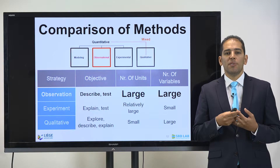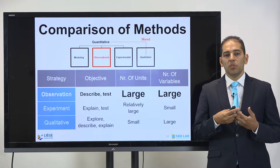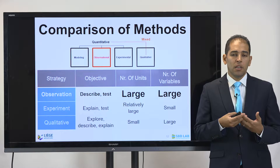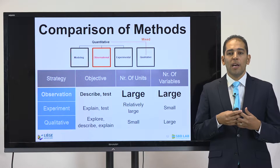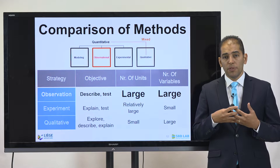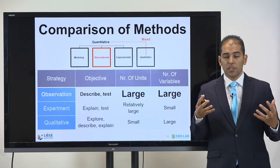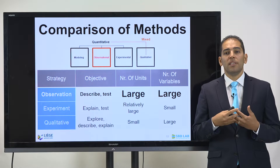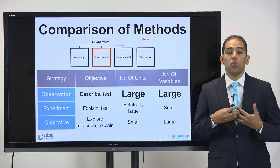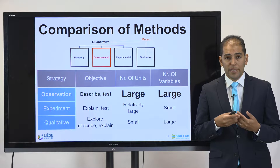When we look at observational research, by default it's looking to describe and to test, and therefore we will have a large number of units or subjects that we will collect data about, and we will also have a large number of variables.